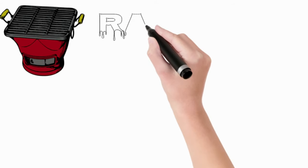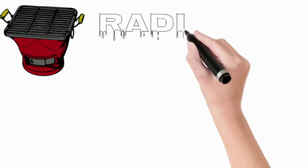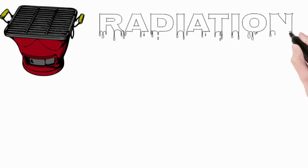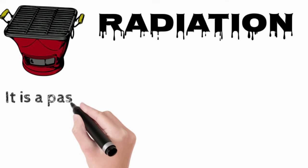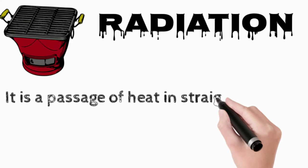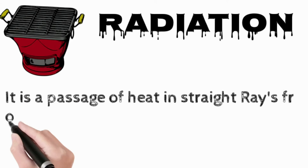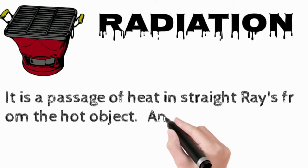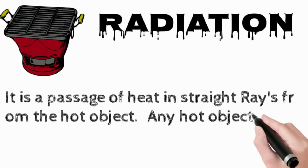Radiation method: it is the passage of heat in straight rays from a hot object. Any object in the path of the rays becomes hot. Examples include gas and electric grills.